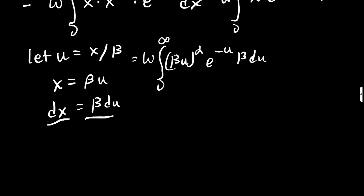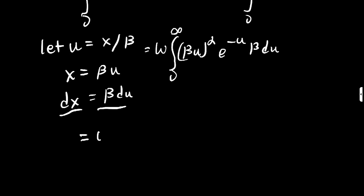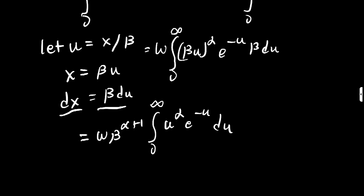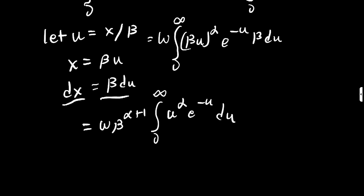Bringing the constants out, the beta to the alpha and the extra beta combine to give beta to the alpha plus 1. So we have omega times beta to the alpha plus 1, times the integral from 0 to infinity of u to the alpha, e to the negative u, du. And indeed, this is in the form of the gamma function.